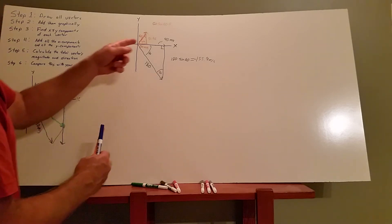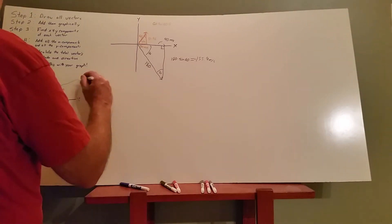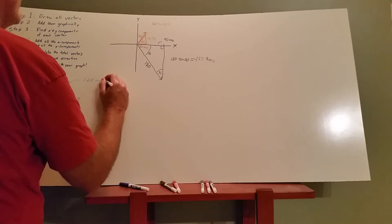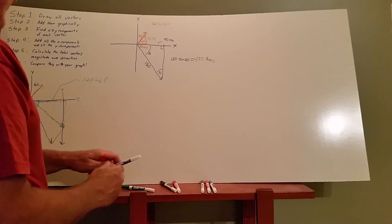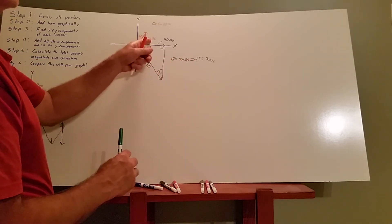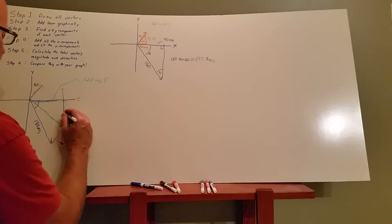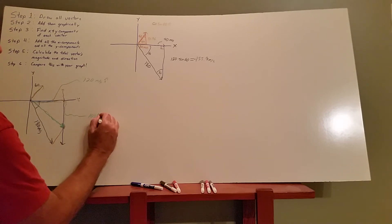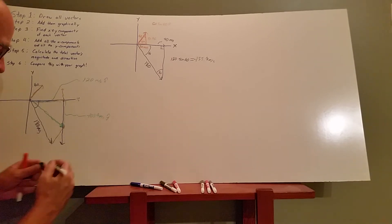Adding the x components: 30 plus 90 gives 120 meters per second in the x-hat direction. Adding the y components: negative 155.9 plus positive 51.96 gives a total of negative 103.9 meters per second in the negative y-hat direction. So the resultant vector has components of 120 in x and 103.9 in negative y.